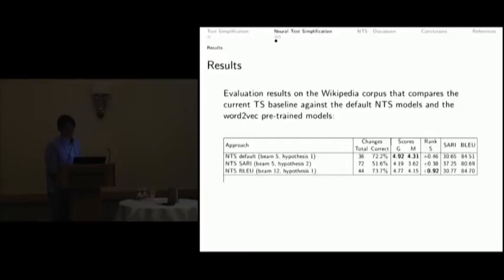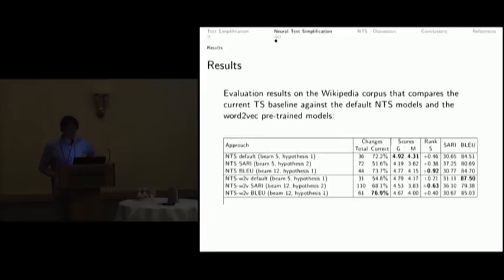If we take a neural text simplification model and we do a grid search on beam size and the hypothesis, given the automatic evaluation metric called SARI, we observe that the total number of changes increases to 72. The system itself or the output is more likely to have more differences compared to the input, which correlates with what SARI indicates. While BLEU is also a conservative score, it shows that it tends to have grammatical sentences with less changes.